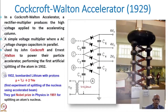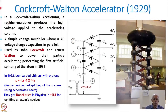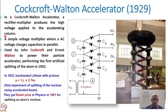You can see here in the diagram the circuit mentioned here. In the Cockroft-Walton accelerator, a rectifier or multiplier produces a high voltage applied to the accelerating column, and that accelerating column is used for accelerating the particles. Now what is this Cockroft-Walton type accelerator?